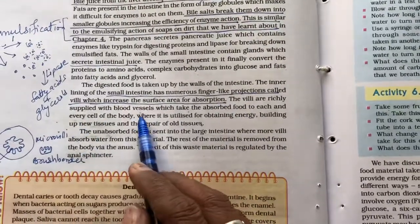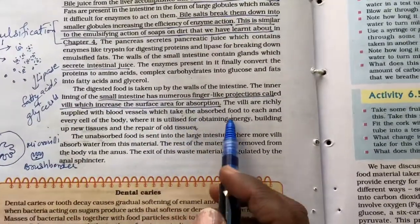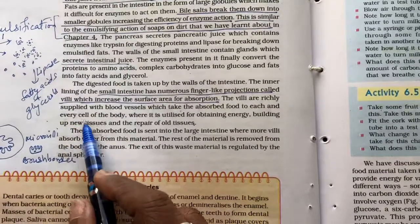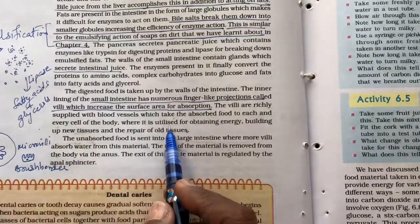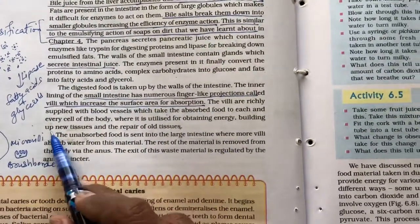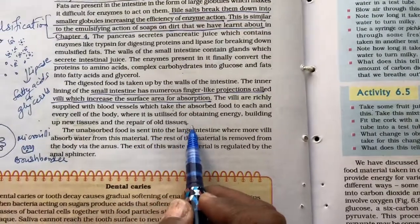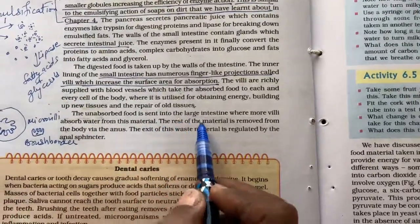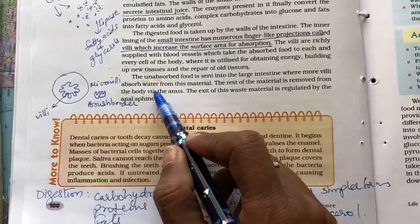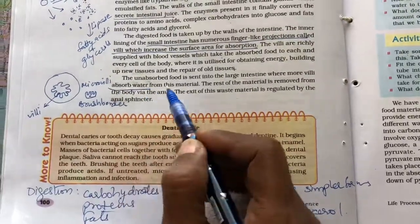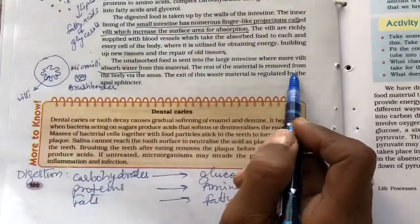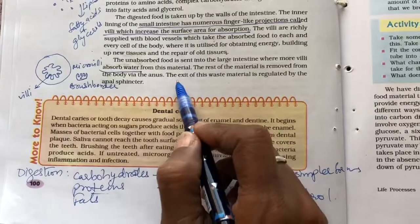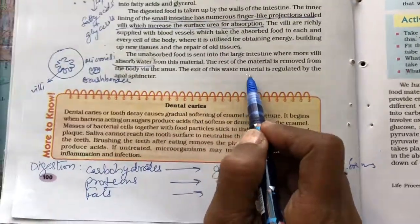The villi are richly supplied with blood vessels which take the absorbed food to each and every cell of the body, where it is utilized for obtaining energy, building up new tissues and repair of old tissues. The unabsorbed food is sent to the large intestine where more villi absorb water. Absorb water only in the large intestine. The rest of the material is removed from the body by the anus. The exit of this waste material is regulated by a sphincter again.